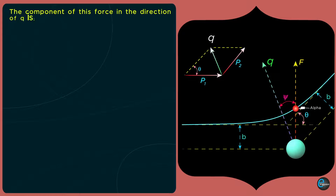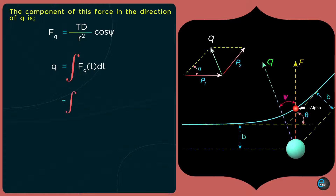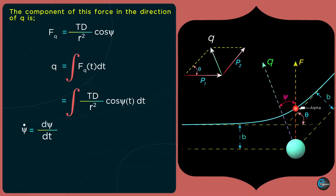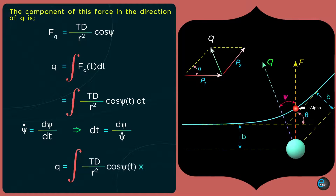The component of this force in the direction of q is f_q = (Td / r²)cosψ. Therefore, the change in momentum is q = ∫f_q dt = ∫(Td / r²)cosψ dt. Since ψ̇ = dψ/dt, we have dt = dψ/ψ̇, so q = ∫(Td / r²)cosψ · (dψ / ψ̇).